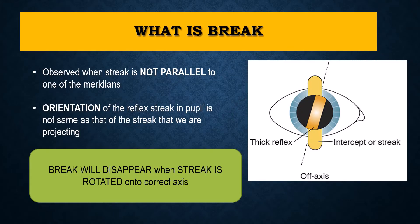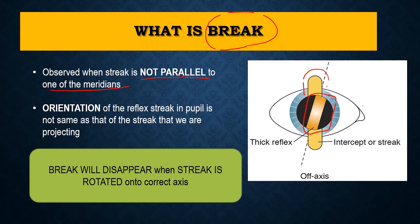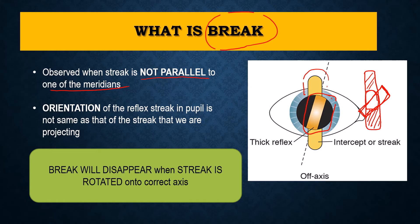The first characteristic is the break. A break is observed when the streak is not parallel to one of the meridians. The streak is vertical but the reflex in the pupil is not parallel to it. Because of that orientation mismatch, there will be a break in the reflex. Normally, if the reflex is parallel you will see a continuous reflex aligned with the projected streak. However, if the reflex is oblique or non-parallel to the projected streak, we see a break — and this tells you that astigmatism is present and the principal axis is other than 90 or 180 degrees.